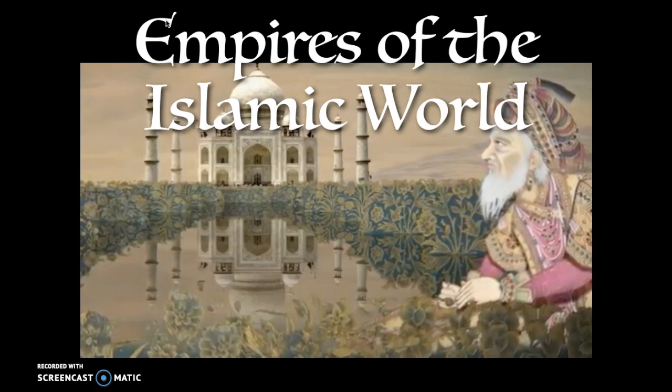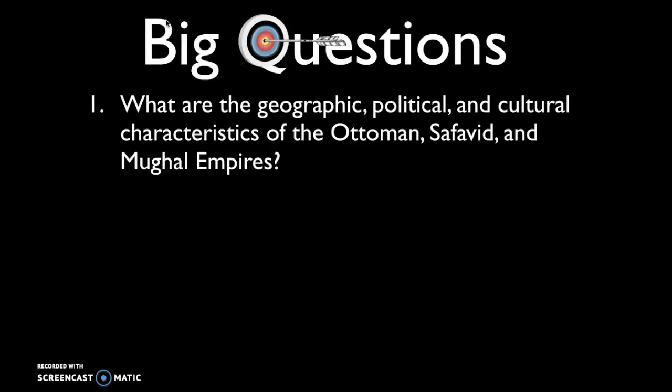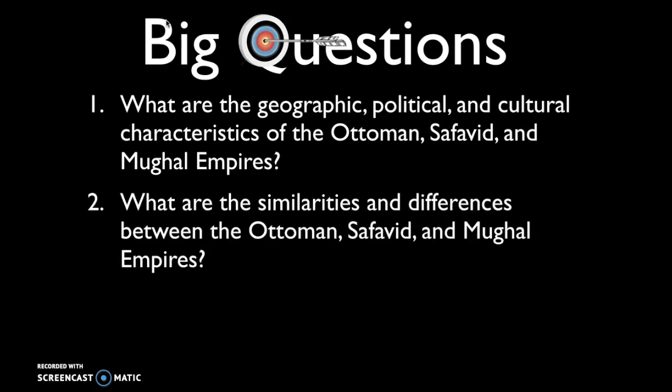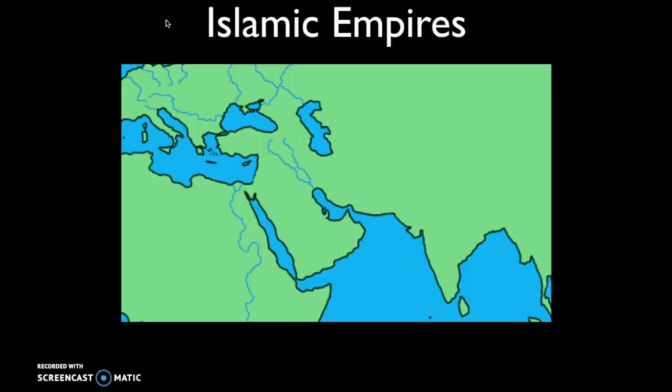Welcome back young scholars. In this video we will be looking at the empires of the Islamic world, and particularly the Mughal Empire. The big questions you should be able to answer after watching this video and the previous video are: what are the geographic, political, and cultural characteristics of the Ottoman, Safavid, and Mughal empires, and how do they compare in terms of similarities and differences?